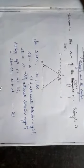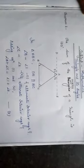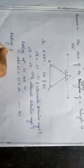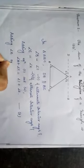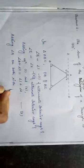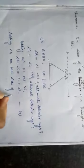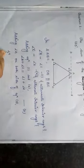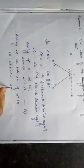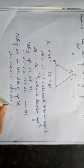I am going to add angle A in both the sides of equation 3. Then we have angle A plus angle B plus angle C is equal to angle A plus angle 1 plus angle 2.